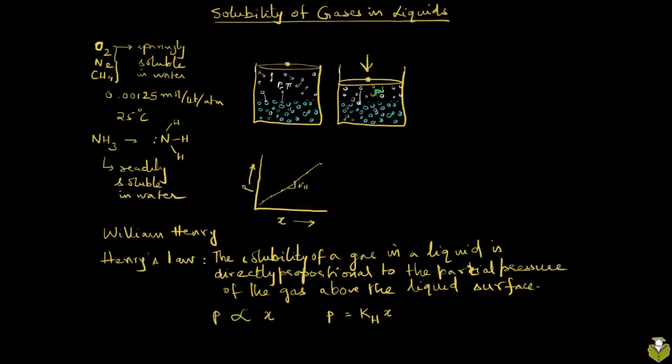The slope of this line is K_H at a given temperature. There is a particular slope, so if you're talking about different gases, each one of them is going to have a different slope. In this case, let's say this is gas A.